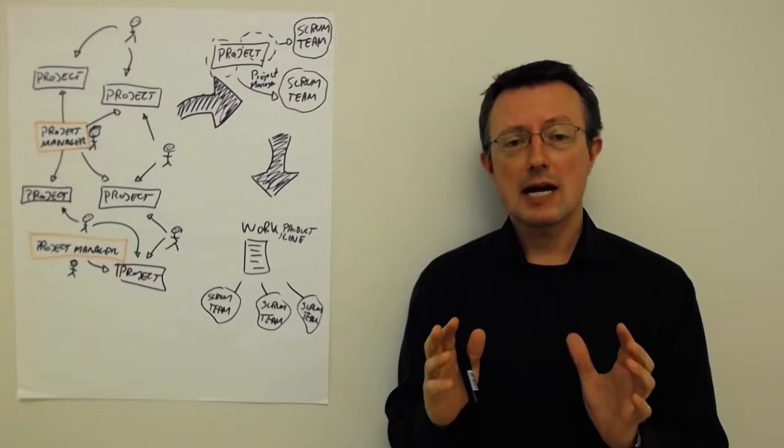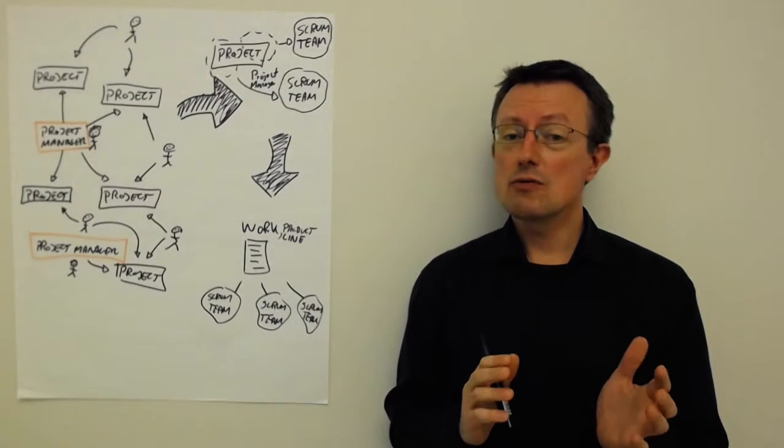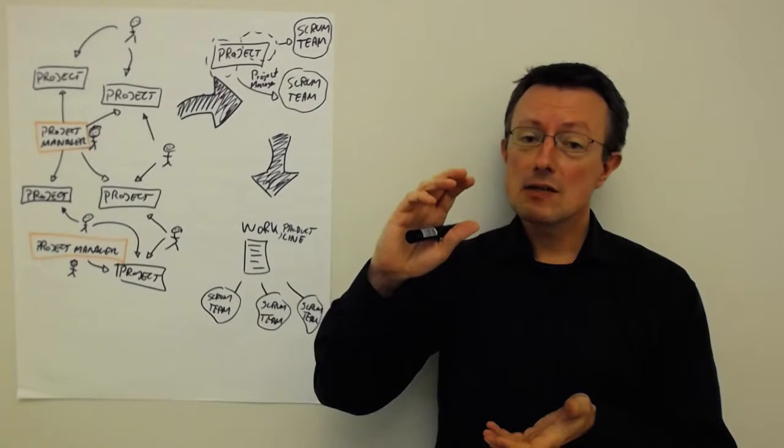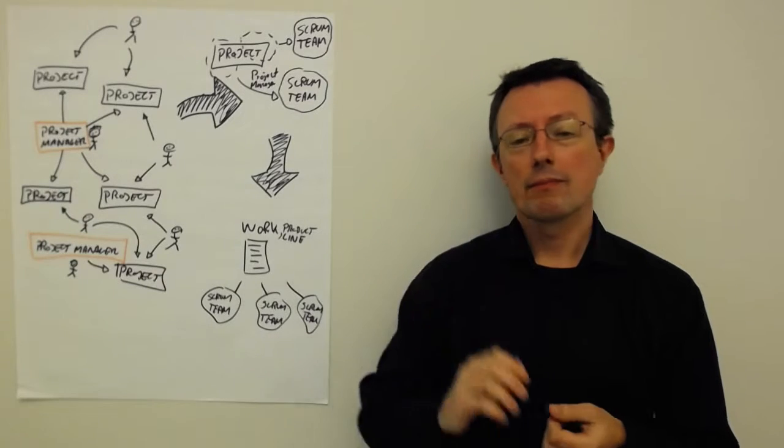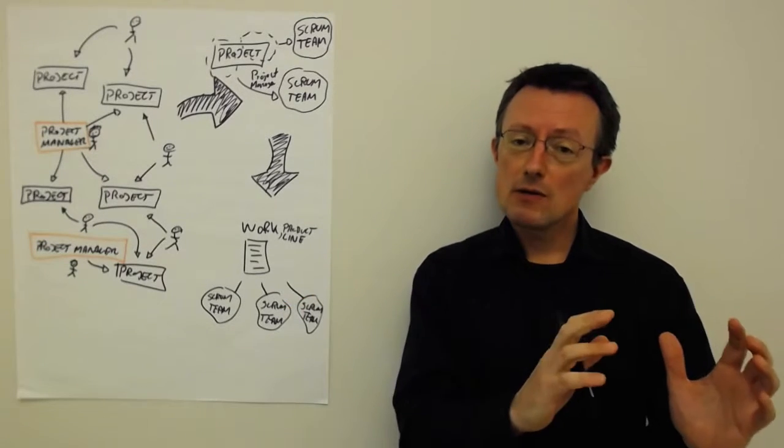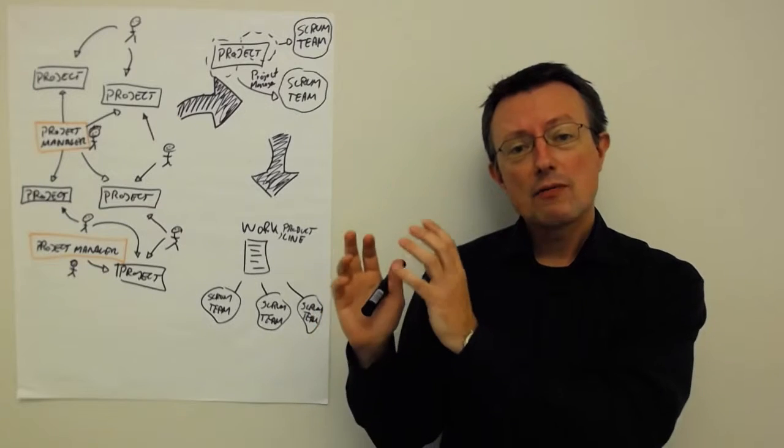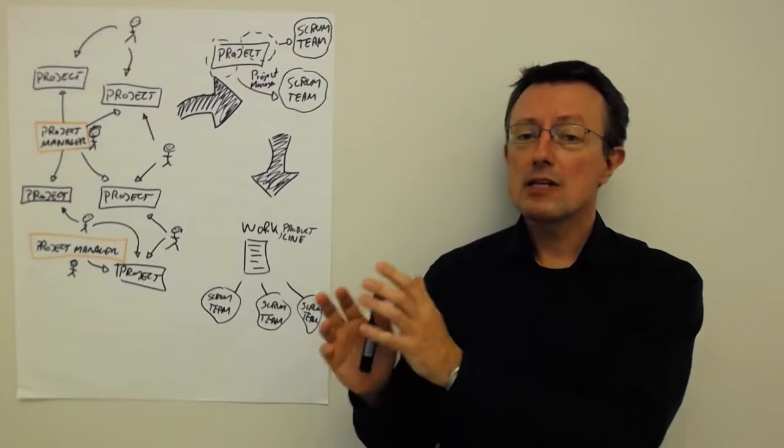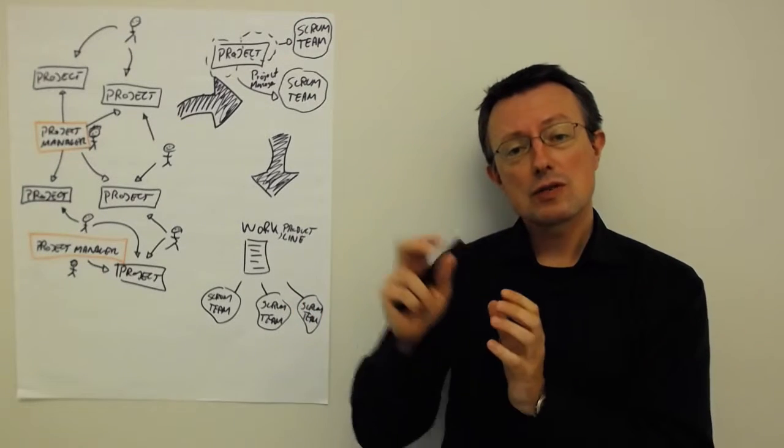I often see a typical challenge in organizations when they start using scrum on top of their existing way of managing projects. They have a number of project managers responsible for their own individual projects with project and scope. Then they try to assign part of the project to different scrum teams.